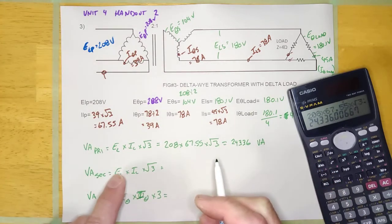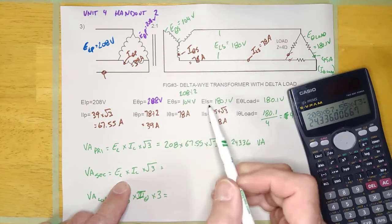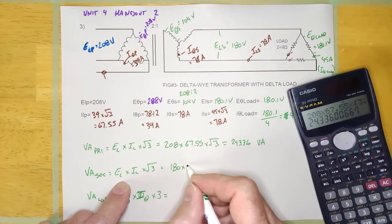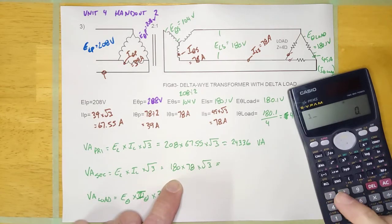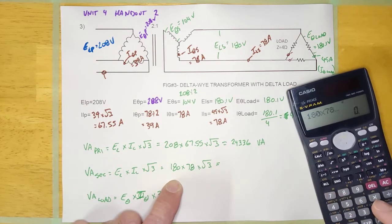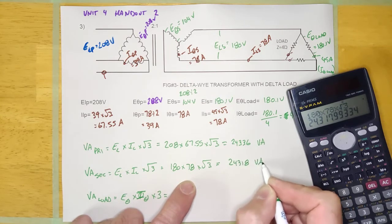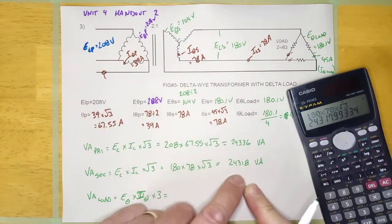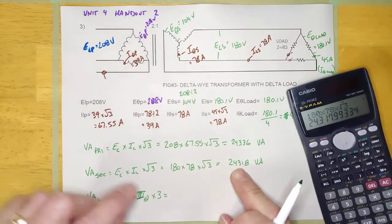Let's check it at the secondary the same way with line values. E-line secondary is right here. So: 180 times 78 times √3 equals 24,318 volt-amps. Notice that they are essentially the same — the small difference is just rounding. Both come out to approximately 24.3 kVA.